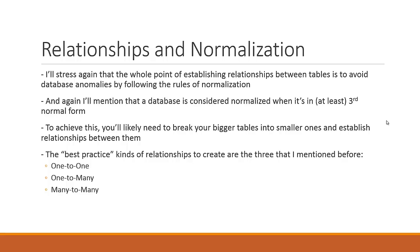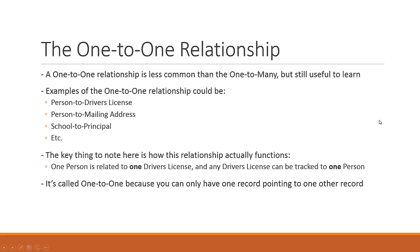The best-practice relationship types are the three I mentioned: one-to-one, one-to-many, and many-to-many. The one-to-one relationship is a little less common than one-to-many, but still useful to learn. Examples include: person to driver's license, person to mailing address, and school to principal. In North America, a person can only legally hold one driver's license, so one person is assigned one driver's license — a one-to-one relationship.